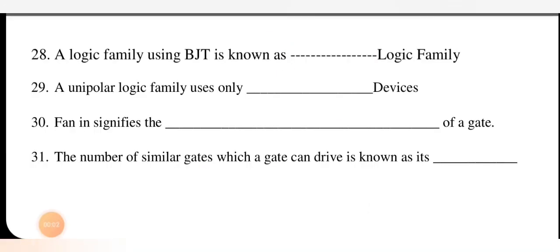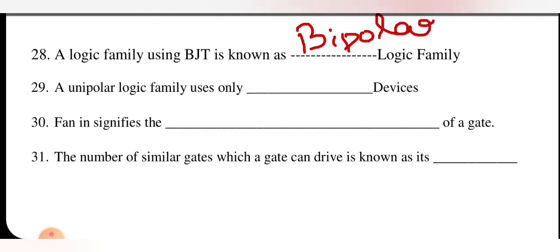A logic family using BJT (bipolar junction transistor) is known as a bipolar logic family — bipolar means current can flow in both directions. A unipolar logic family uses only MOS devices — unipolar means current flows in only one direction, either due to holes or due to electrons.